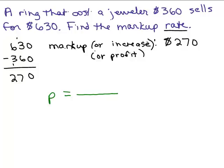So the original cost here is $360. So I want to take 360. The base is always what goes in the denominator here. So there's your 360. And then the markup, that amount it went up goes in the numerator. So that's the 270.